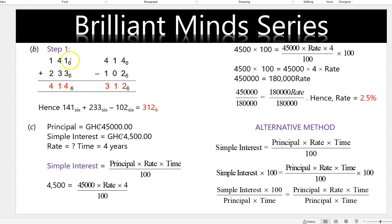For number base: 141 base 6 plus 233 base 6. 1 plus 3 is 4, 4 plus 3 is 7. In number base, when you add and the number exceeds the number base you divide. So 4 plus 3 gives us 7. In base 6: 6 divides 7 once remainder 1, so we write 1 and carry 1.